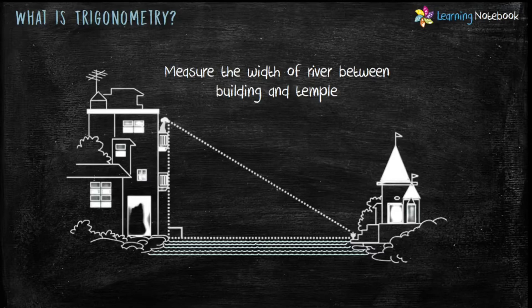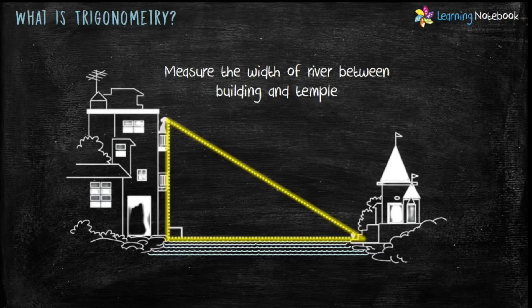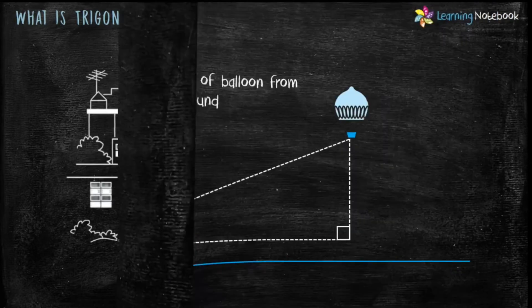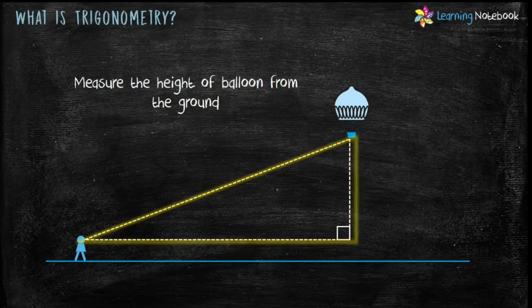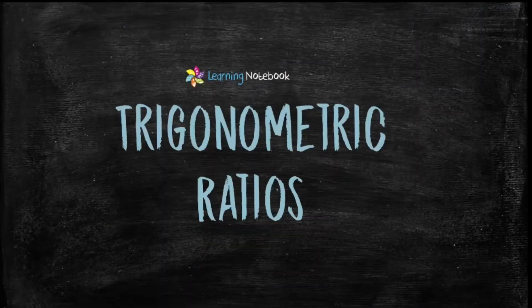Trigonometry is very useful in measuring height and distances. For example, a girl sitting on a balcony can measure the width of a river between a building and temple using trigonometry. A boy on the ground can measure the height of a hot air balloon from the ground using trigonometry. Even engineers and scientists use trigonometrical concepts to find distances of stars and planets from the earth.